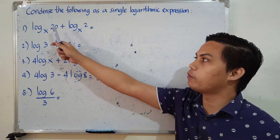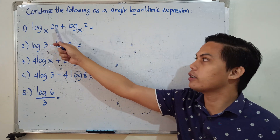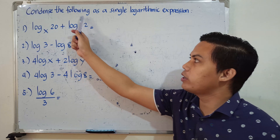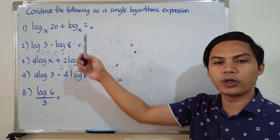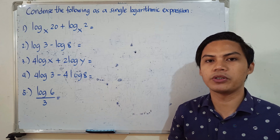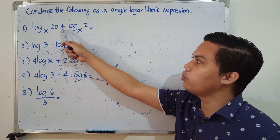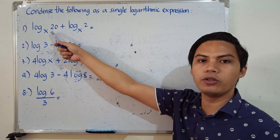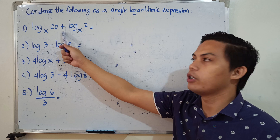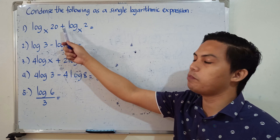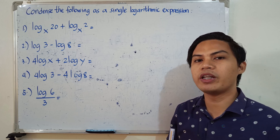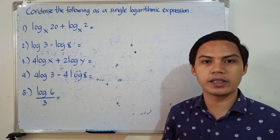Number one: the logarithm of 20 to the base x plus the logarithm of 2 to the base x. This is the expanded form. We're going to condense them to make a single logarithmic expression. We notice that the operation between the two logarithmic expressions is addition — so it's the reverse of what we did last time.